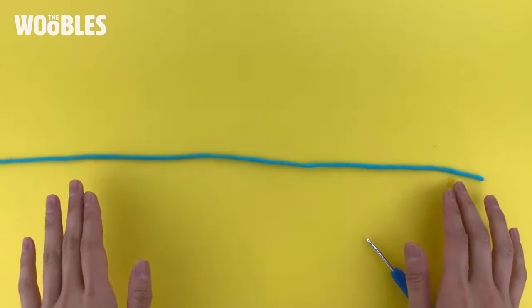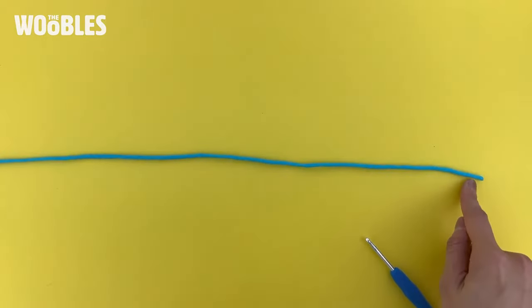To make a slip knot, take your piece of yarn and lay it out so that the cutoff piece of it is off to the right.